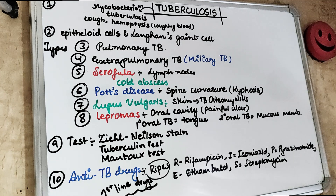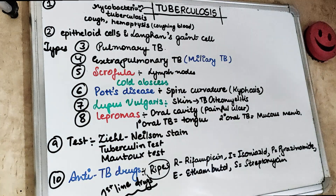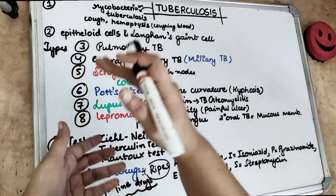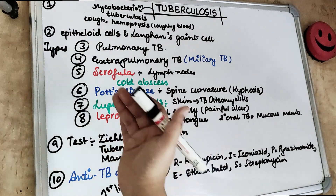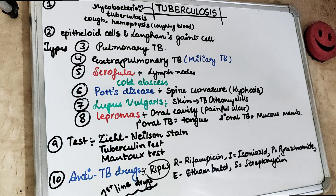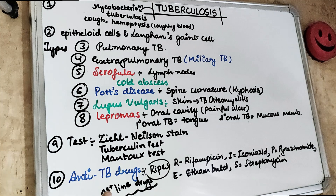Less commonly, TB can be transmitted via unpasteurized cow milk. If you don't boil the milk and take it directly, there is a chance of getting TB. However, this is very rare. If you ingest unpasteurized cow milk, you may get infected with M. bovis or any other atypical mycobacterial infection.